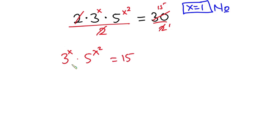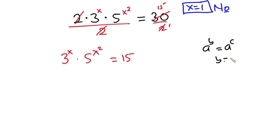If we try to divide each side by 15, it's going to get complicated. Instead, if we have a to the power b equals a to the power c, we can say b equals c, because we have the same base. So let's make the bases of this equation the same so we can equate the exponents.